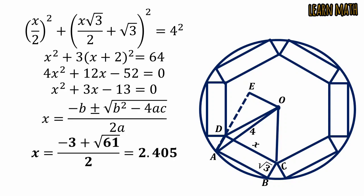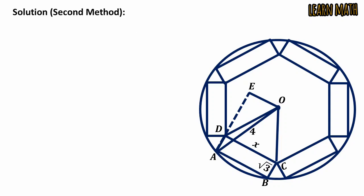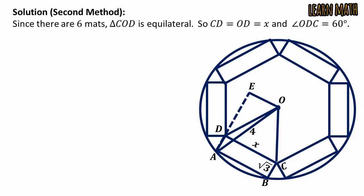Now, we are going to solve the same question by another method. Since there are 6 mats and triangle COD is equilateral, so CD equals OD equals x and angle ODC equals 60 degrees. Also, angle ODA equals 60 plus 90 equals 150 degrees.